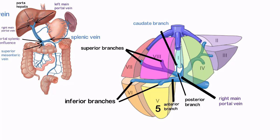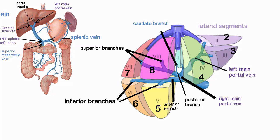The right lobe is supplied via segments 5, 6, 7, and 8. The left main portal vein initially courses to the left, then turns medially toward the ligamentum teres. It branches to supply the lateral segments, segments 2 and 3, of the left lobe, and the superior and inferior sections of segment 4.